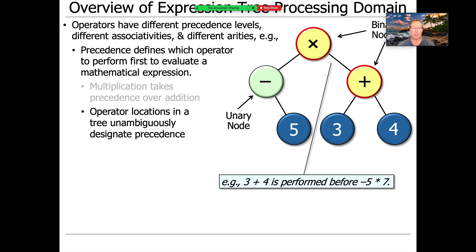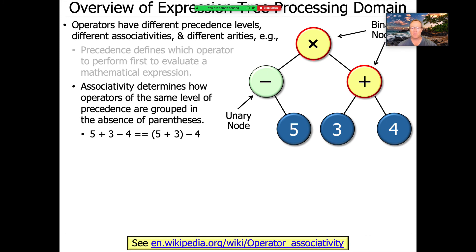The operator locations in the tree unambiguously designate the precedence. So here you can see three plus four is performed before minus five times seven. And that's one of the virtues of an expression tree is that it shows that structure unambiguously. Associativity determines how operators of the same level of precedence are grouped in the absence of parentheses. So here you can see something like five plus three minus four, that groups as five plus three minus four.